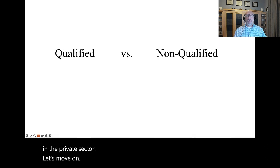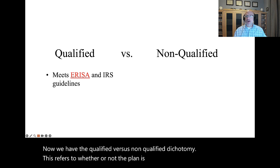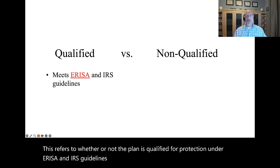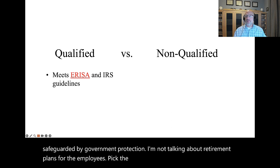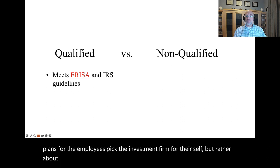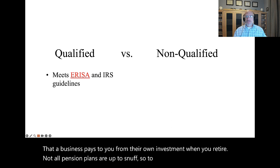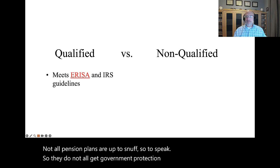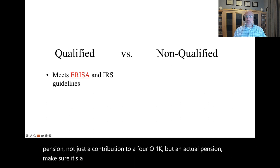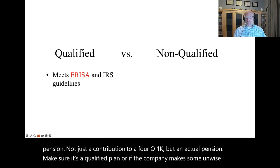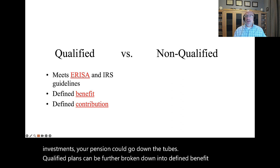Now we have the qualified versus non-qualified dichotomy. This refers to whether or not the plan is qualified for protection under ERISA and IRS guidelines. Only a fool would want their pension to not be safeguarded by government protection. Not all pension plans are up to snuff, so they do not all get government protection. If your employer provides an actual pension, make sure it's a qualified plan, or if the company makes some unwise investments, your pension could go down the tubes. Qualified plans can be further broken down into defined benefit or defined contribution.